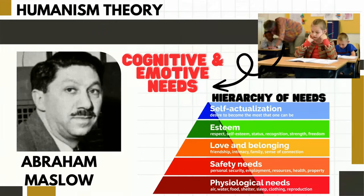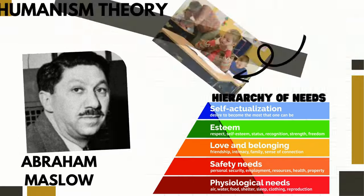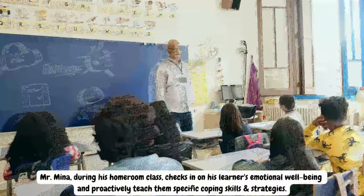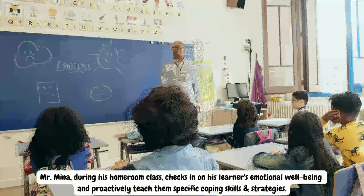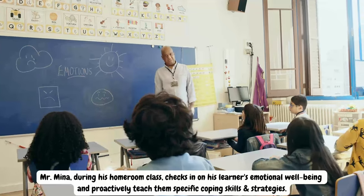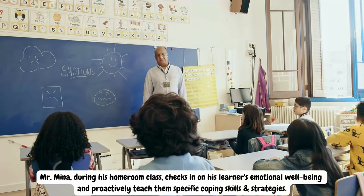The fourth learning theory is Humanism. Rather than just achieving predetermined learning goals, learning is meant to realize a person's potential through self-actualization. The key idea in this approach is Maslow's research on the hierarchy of needs, which emphasizes the learner's cognitive and emotional needs in particular. For example, Mr. Mina, during his homeroom class, checked in on his learners' emotional well-being and proactively taught them specific coping skills and strategies.